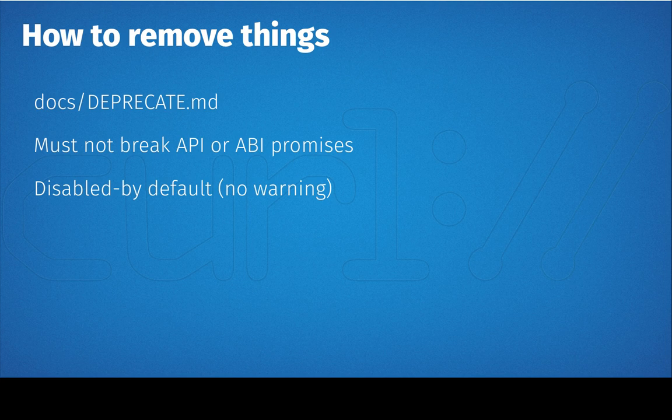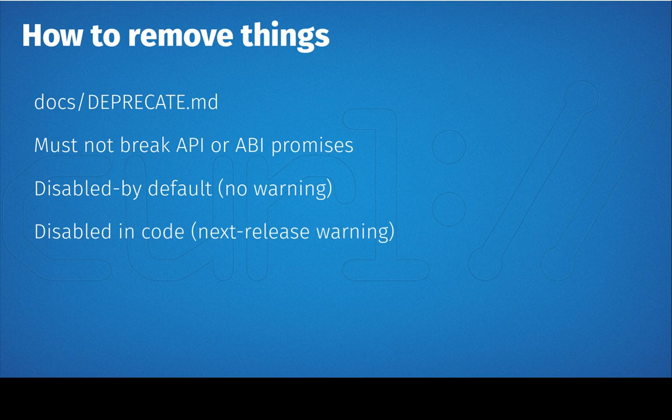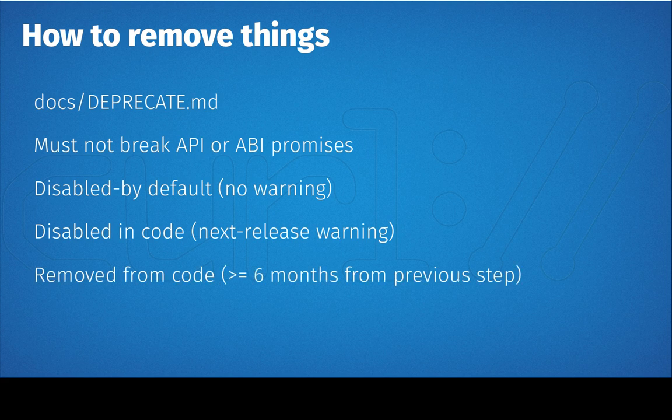So we start out by disabling things by default without any warning, document it, and tell everyone in the changelog that we're removing things — it doesn't work anymore — but we don't actually remove the code. Like we have disabled pipelining and the global DNS cache since a while back. It's disabled, you can't use it, you can ask for it, but nothing will happen. The code is still there. Then we disable by default, flip the default value to off, then disable it in the code so you can't even enable it by force. And then roughly six months or later after that, we remove the code completely, like we are about to remove pipelining.